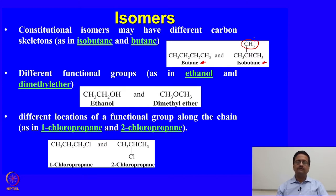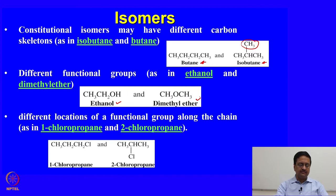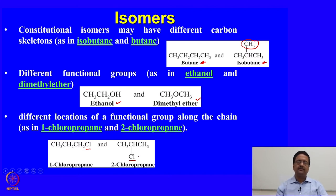A different functional group may give rise to isomerism. For example, ethanol and dimethyl ether both have the same chemical formula C2H6O, but the way the atoms are bonded is different in these two molecules — those are two different isomers of the same chemical formula. The third type of constitutional isomer can be different locations of a functional group or any substitution. For example, 1-chloropropane and 2-chloropropane — the position of the chlorine atom is different in these two molecules.